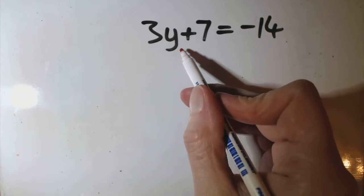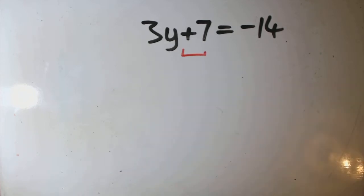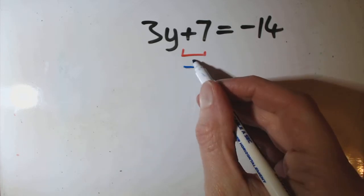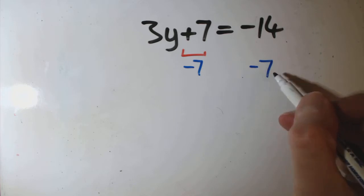So what we've got is, we need to try and get rid of this 7. So obviously to do that, it's plus 7, so we just take away 7. And again, you have to take away 7 here.